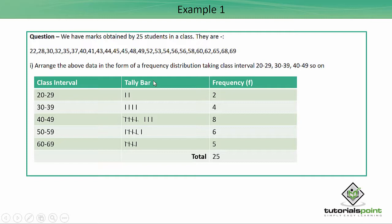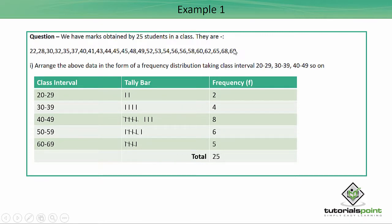52 comes in the 50 to 59 interval, then 53, then 54. After four tally bars, 56 is the fifth, marked as a diagonal slash. Then 58 gets a new tally bar. For 60, I use the 60 to 69 class interval, marking 62, 65, 68, and then 69 as the fifth diagonal slash.